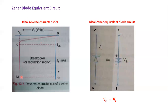So you now understand the ideal reverse characteristic behavior of a Zener diode. Based on this, the ideal Zener equivalent circuit can be considered as a battery having a voltage equivalent to the breakdown voltage of the Zener diode, where VZ' and VZ are the same.